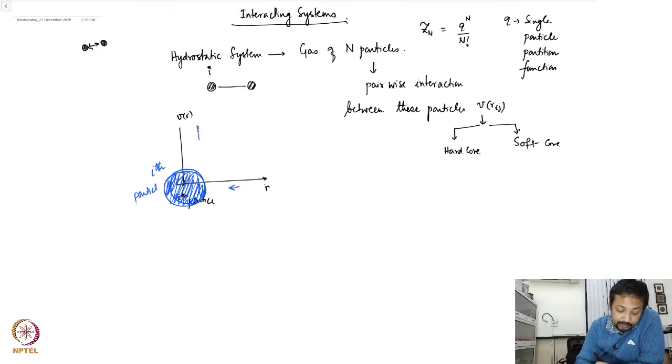So there is a certain size of this ith particle and no another particle can come and sit inside this volume. So essentially we say that the potential is infinitely large high so that you cannot have any kind of penetration in this part.